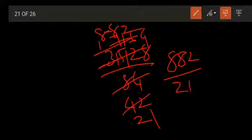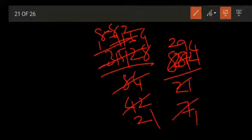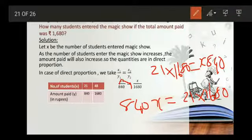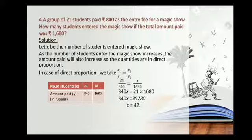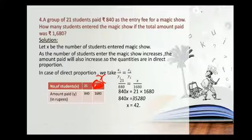Dividing 882 by 21: 7 threes are 21, 2 threes are 6, carry 2; continuing the division gives 42. So X is equal to 42. Therefore the number of students who entered the magic show is 42.